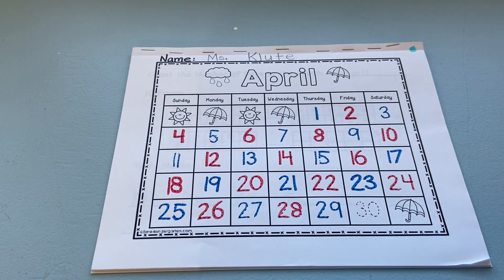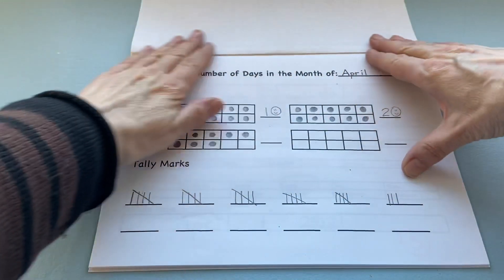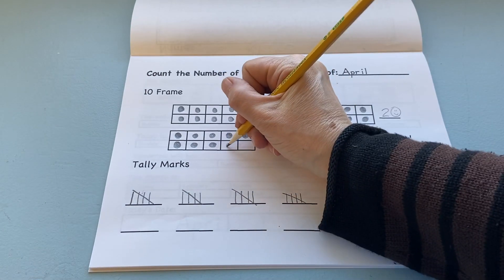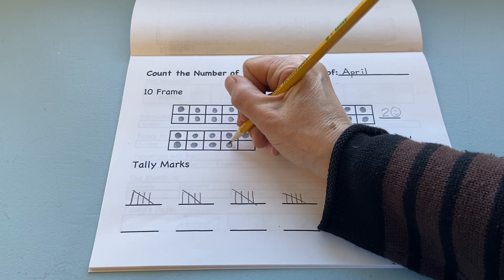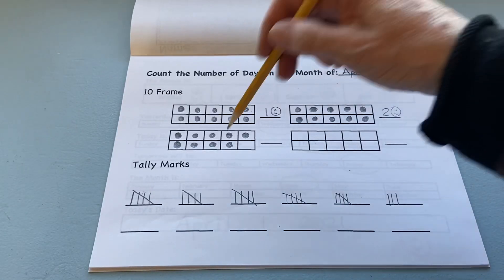Now, boys and girls, what do you notice about your 10 frame down here? One less than 10 is 9, so you have 10, 29.